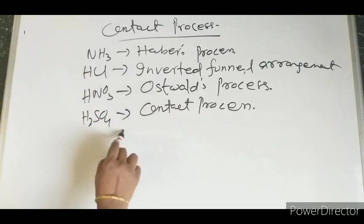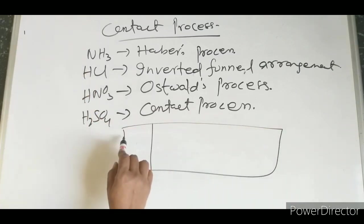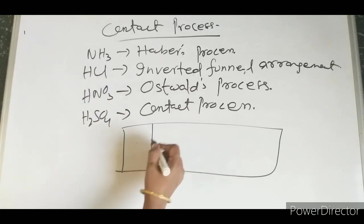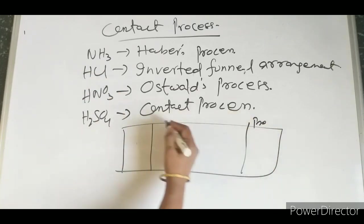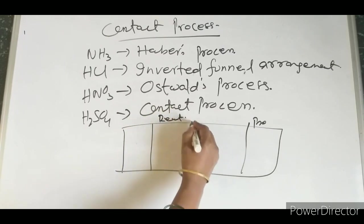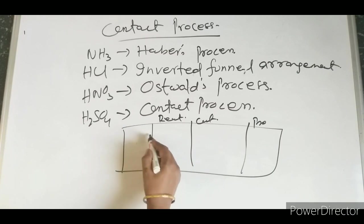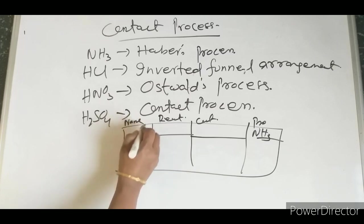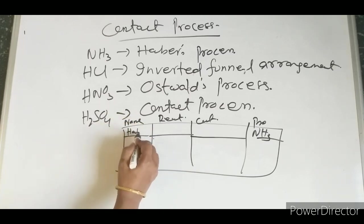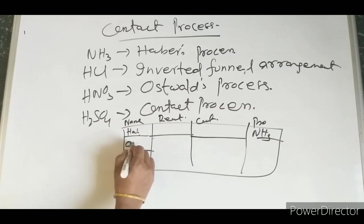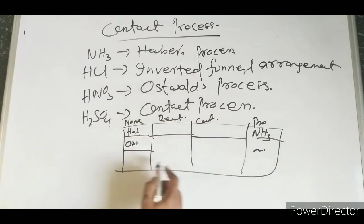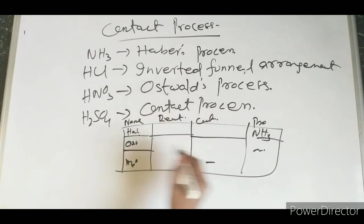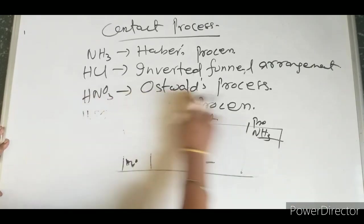These are board exam questions. For example: if the product is ammonia, name the process. If the Ostwald Process is given, what is the product? If H2SO4 is given, what catalyst is used? All these combinations are important to remember.